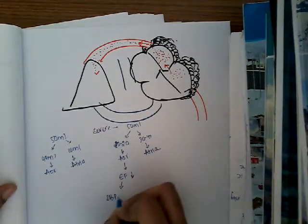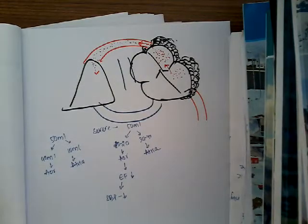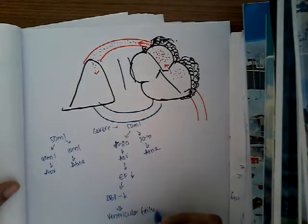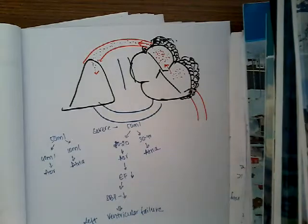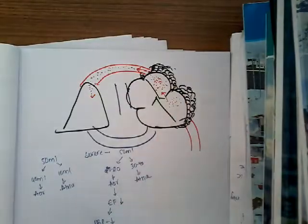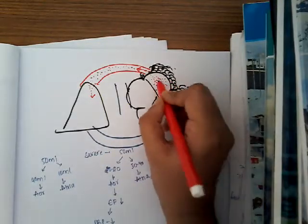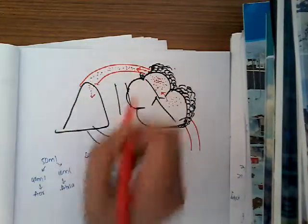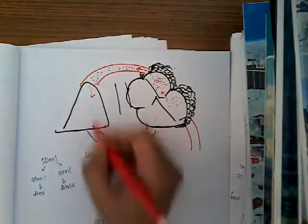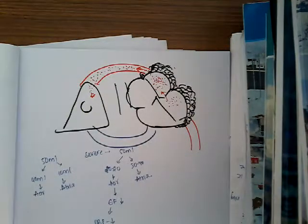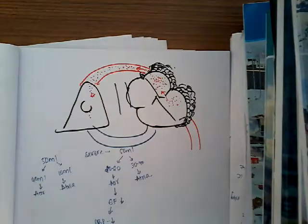As ejection fraction decreases, systolic blood pressure also decreases. Slowly, left ventricular failure occurs. Because of ventricular failure, more and more blood accumulates in the ventricle, increasing ventricular pressure and causing more blood to regurgitate back into the atria. This increased atrial pressure causes increased pressure in the pulmonary arteries, which in turn causes increased pressure in the pulmonary capillaries and alveoli, resulting in pulmonary hypertension.